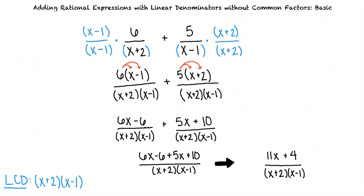So, is this our final answer, or can we further simplify our numerator and denominator? Since 11x plus 4 and the quantity x plus 2 times the quantity x minus 1 have no common factors other than 1, we can't simplify any further.